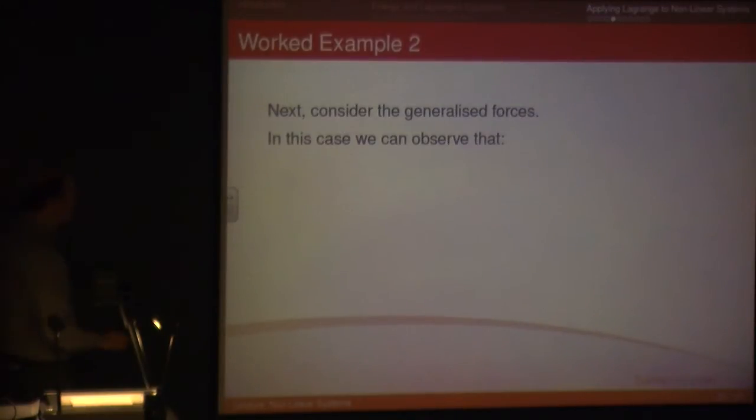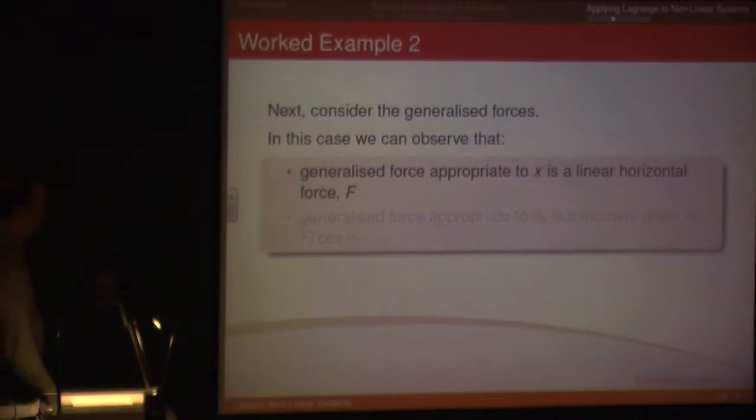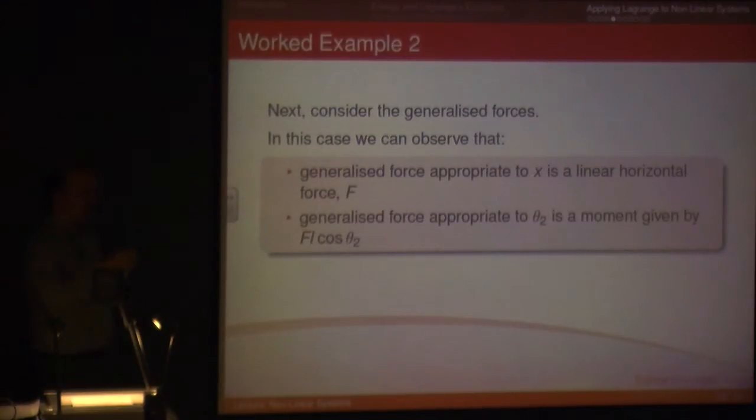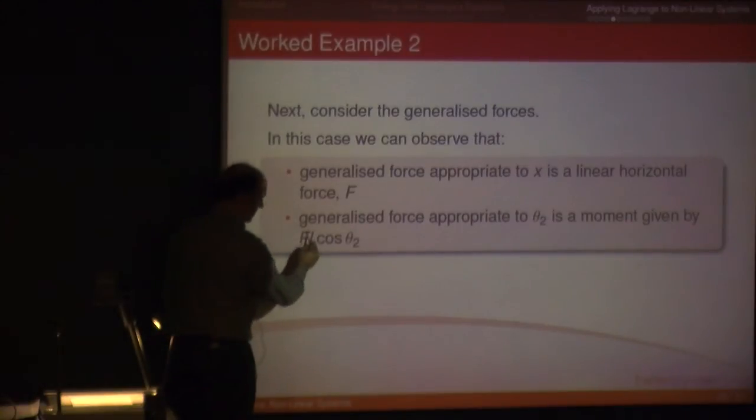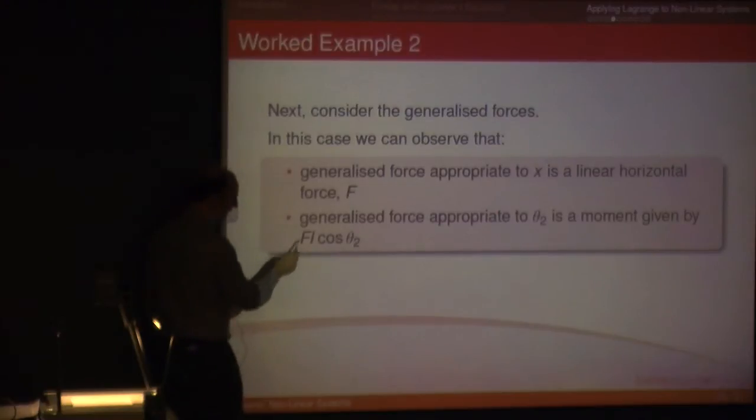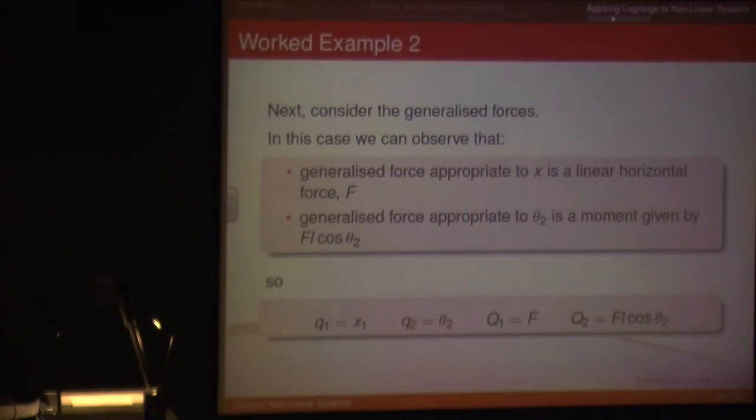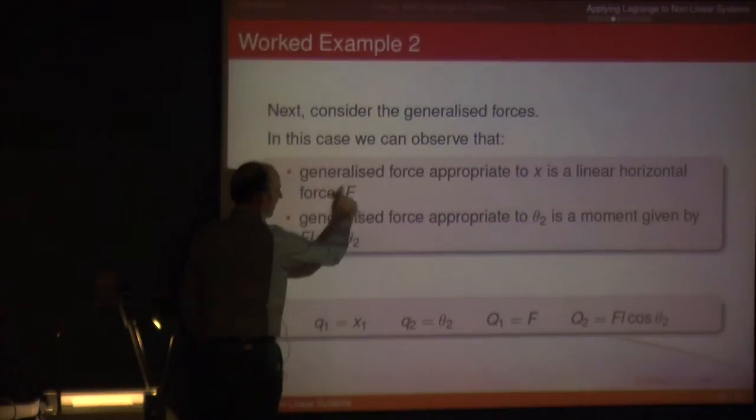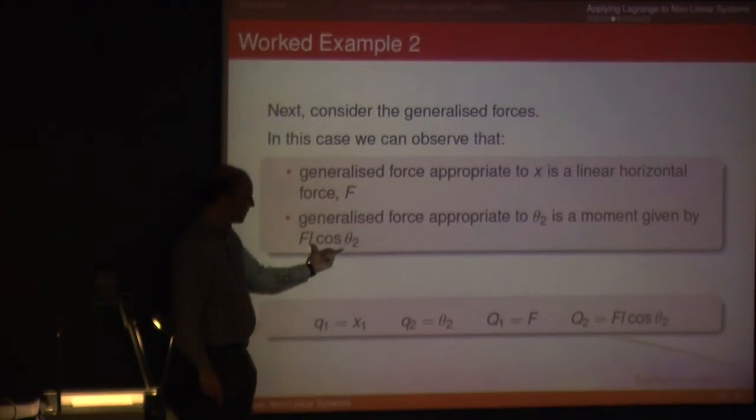We've got to work out the generalized forces first. In this case, we can observe that it's quite clear that if you've got a generalized force, the one appropriate to X is going to be a linear force. F is horizontal, therefore X will be pulled in a horizontal direction. And with the pendulum, if you've got a force at the bottom of the pendulum, now it's generating a moment, and obviously the moment I was, F is horizontal, so the vertical distance, which gives you the moment is going to be L cosine theta 2. Now you can do it this way by using a bit of logic and a bit of engineering now, so you can look at it in terms of work, which is described in the book. Either way works fine, but that makes, you know, in terms of this makes sense to me. If I've got a force, obviously X is going to vary with that direct force. If I've got an angle, then obviously the force times by the moment arm will give me a moment, which is the thing to do with angles. So I've got those two things down there.